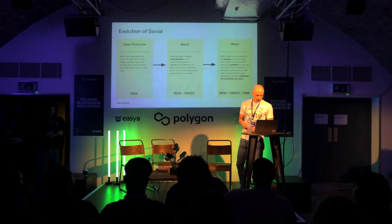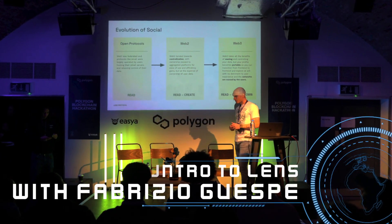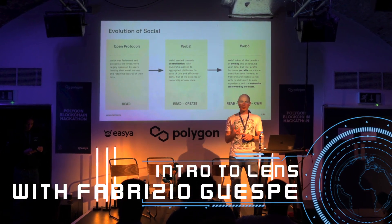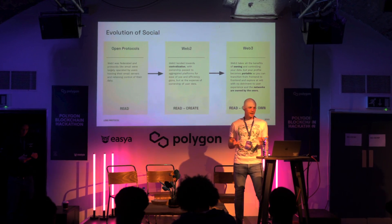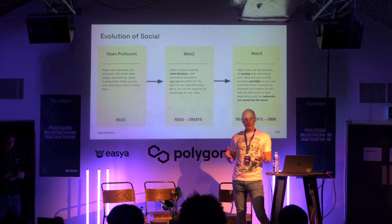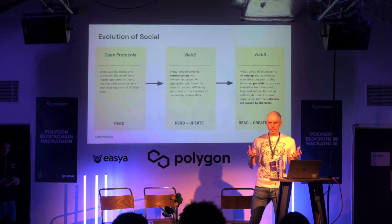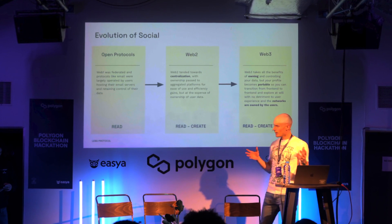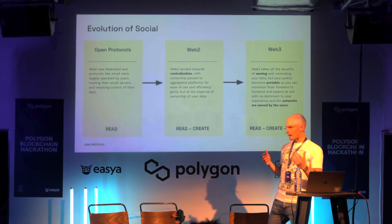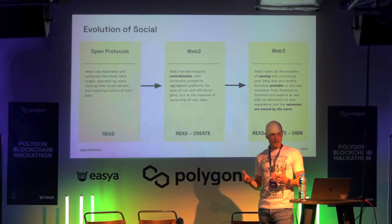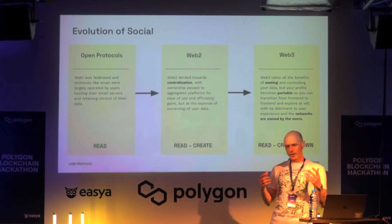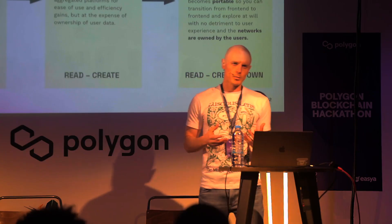What is Lens Protocol? The internet at the beginning was thought of as open protocols — we had SMTP, FTP, RSS, HTTP. The internet was built upon these open protocols, free and open to everyone. Then in the middle we had 20 years of opportunistic entrepreneurs who built great applications like the ones we use today, but they were closed applications.